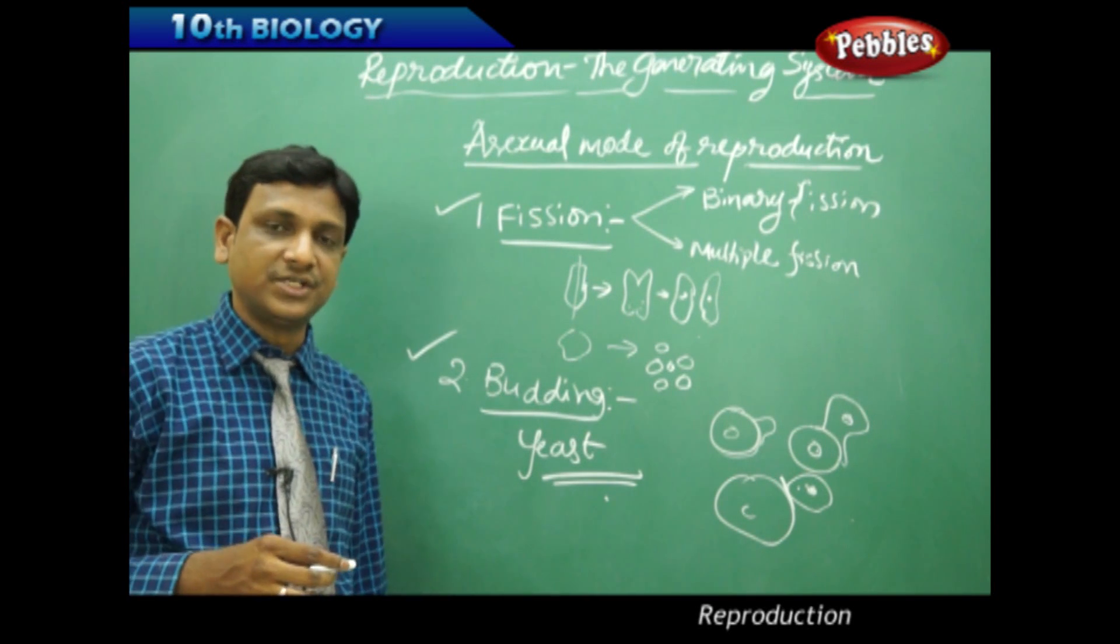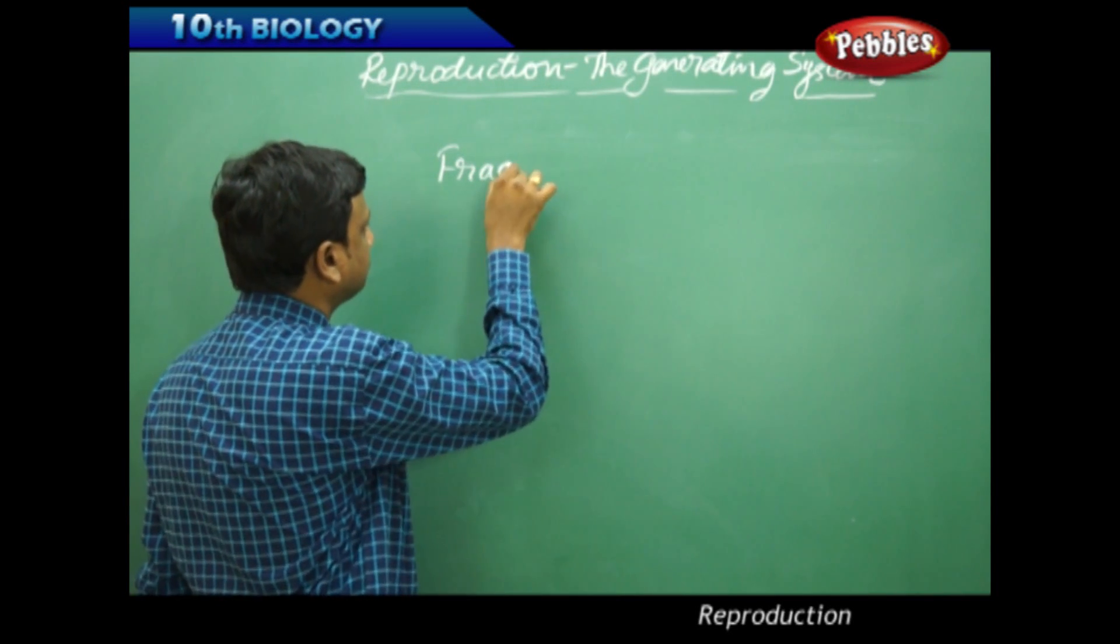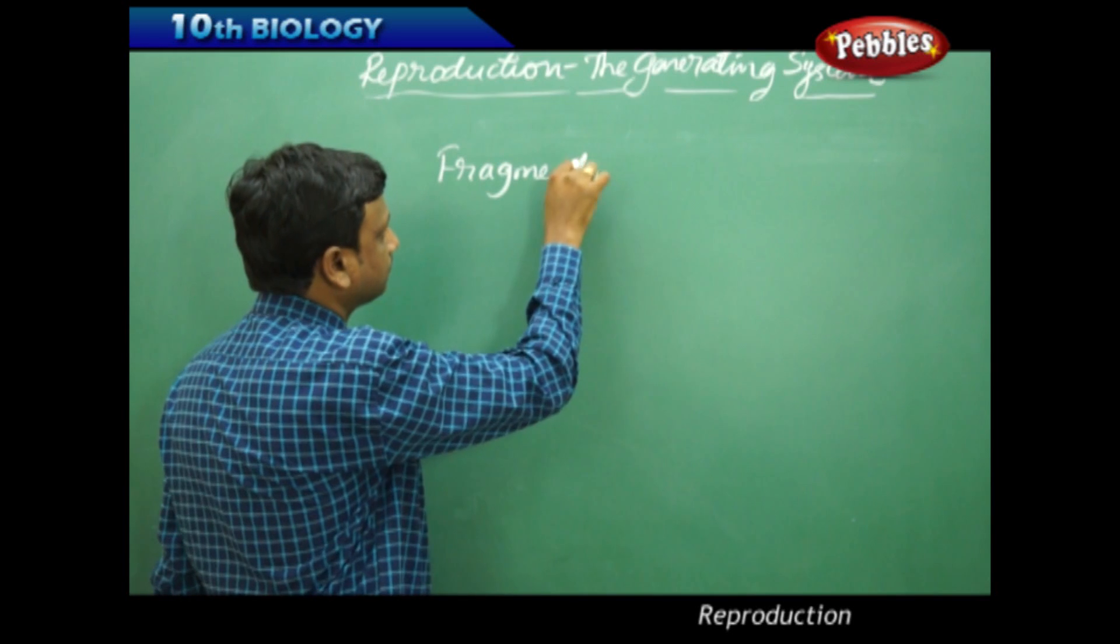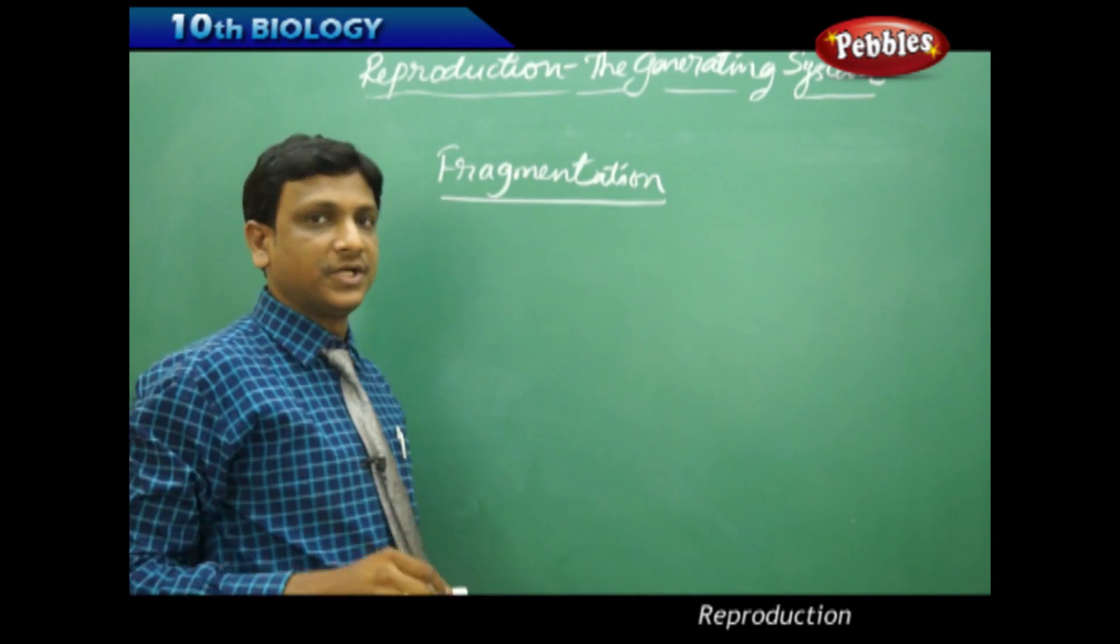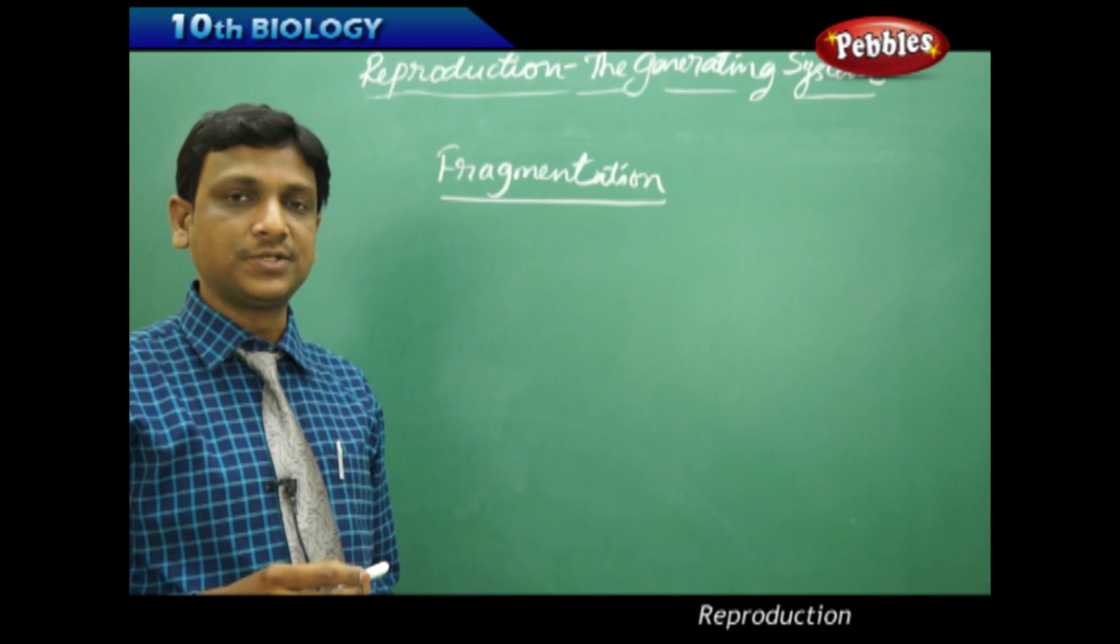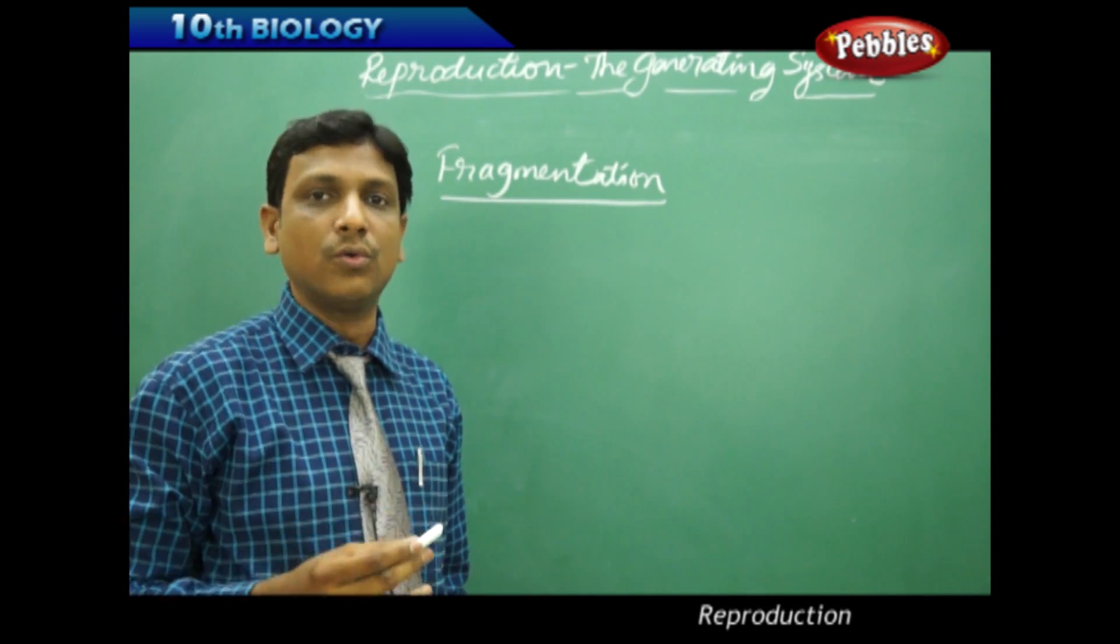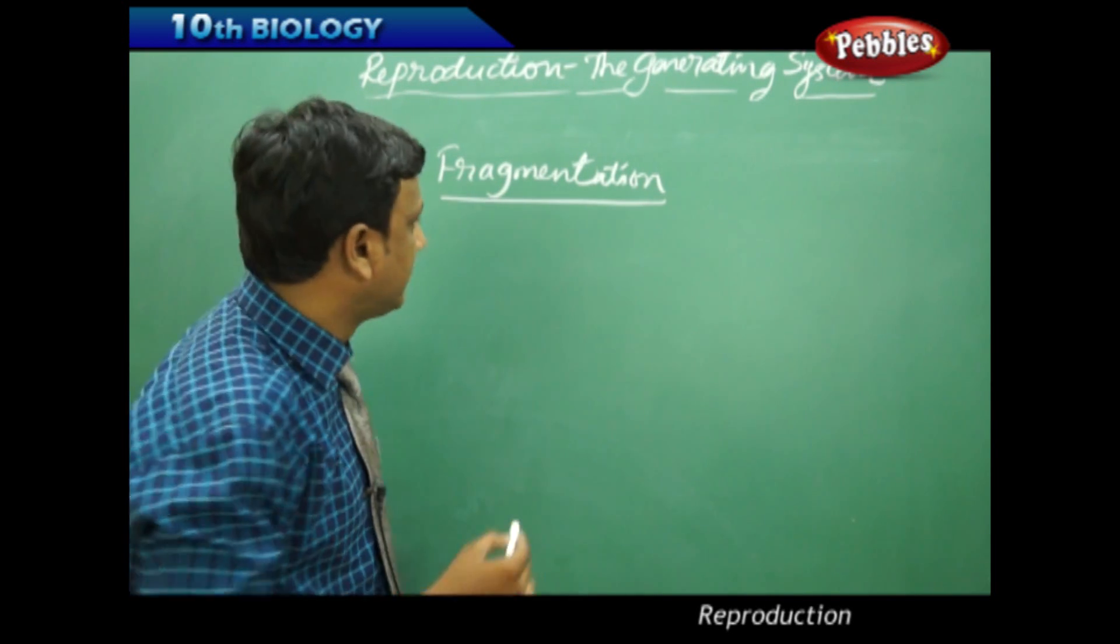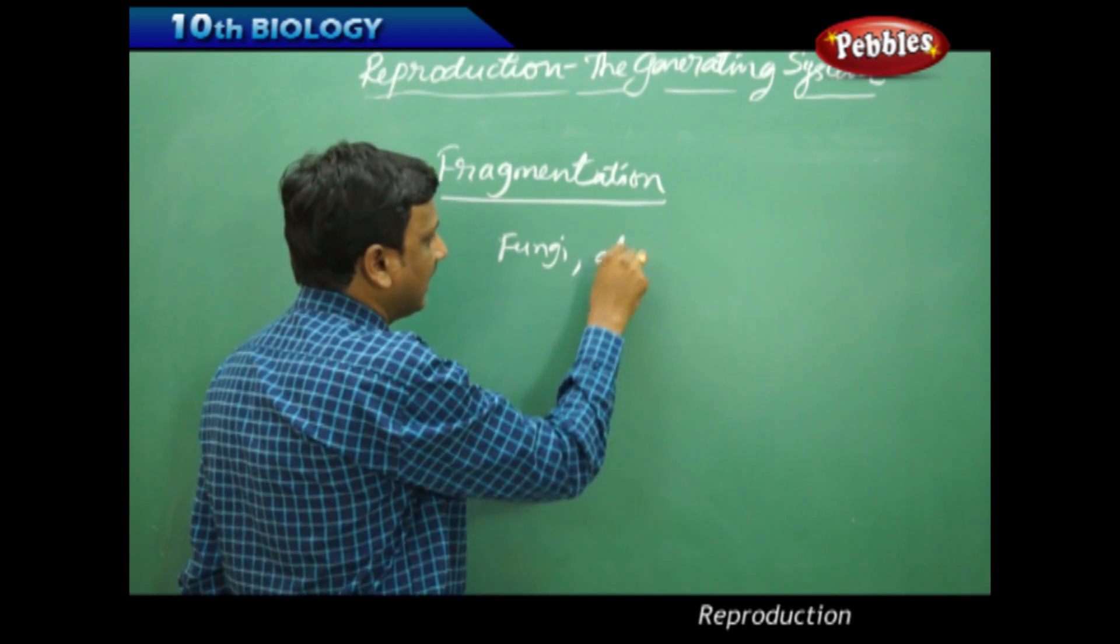The next one is fragmentation. Fragmentation is a method or mode of asexual reproduction in which an organism can grow from any of its fragments. The examples are fungi, algae, and moss.